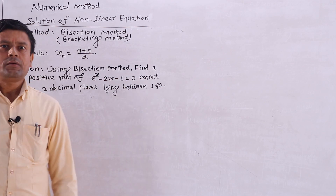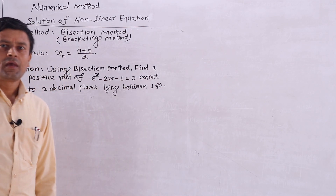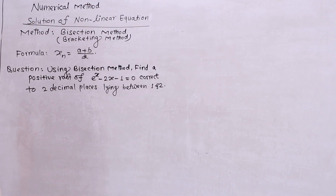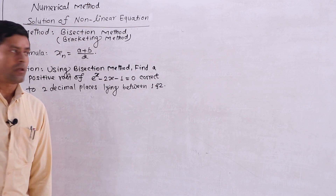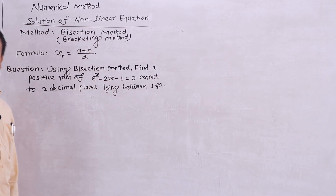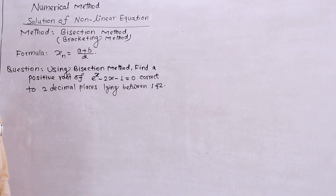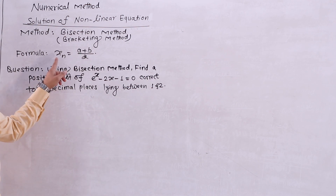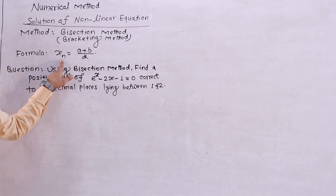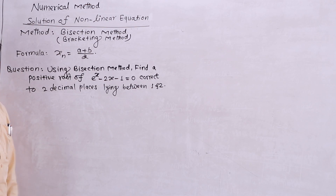Welcome to the Mathematics class. Today I will introduce the solution of non-linear equations. The bisection method is a root-finding method, also called the bracketing method. The formula is x_n = (a + b) / 2. The average method is the root method.